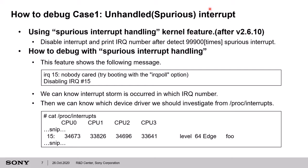After that, as you know, we can work out what interrupt handler is registered on each IRQ number by the proc interface. In this case, we can see which interrupt handler is registered, so we can investigate which device driver registers the interrupt handler by checking the source code. Then we can work out the cause of the interrupt storm.